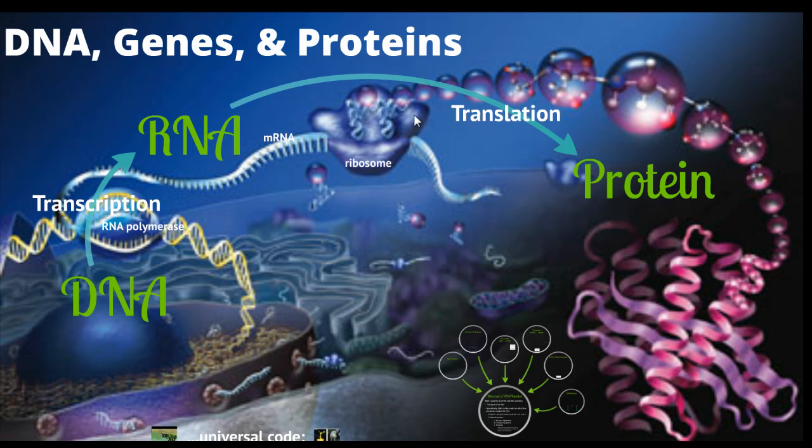And then we have the ribosome. We learned about ribosomes with cells. They're the little molecular machines. They're going to read the messenger RNA and build a protein. Remember proteins are amino acids strung together and then folded into a three-dimensional shape.